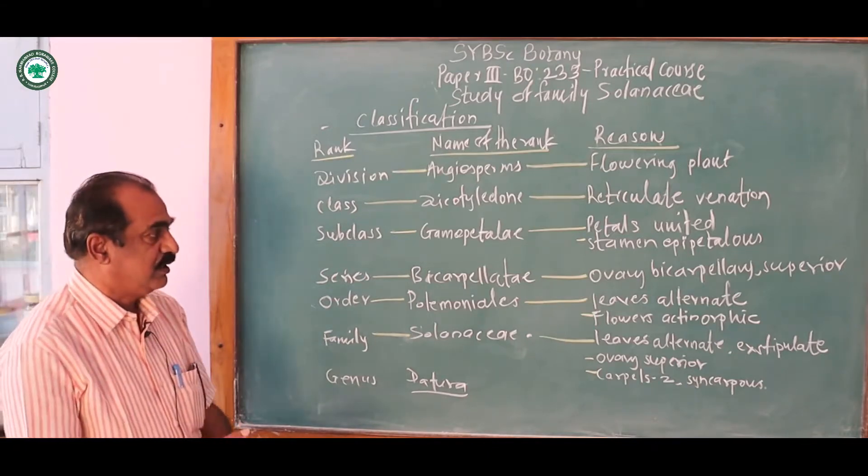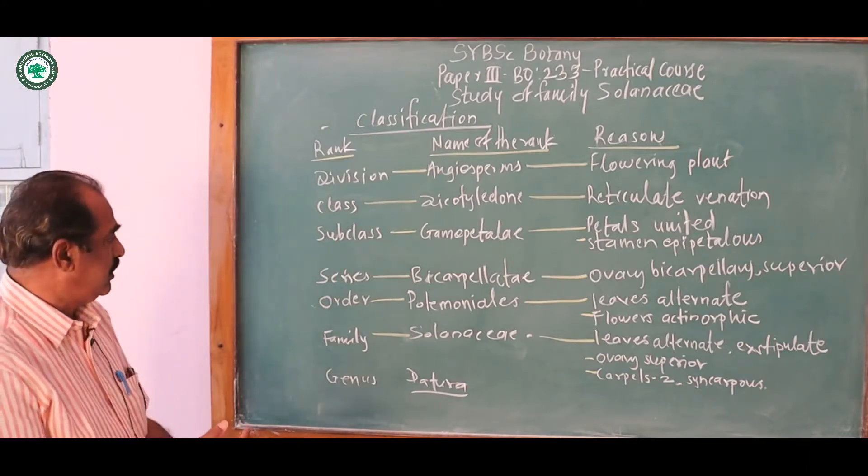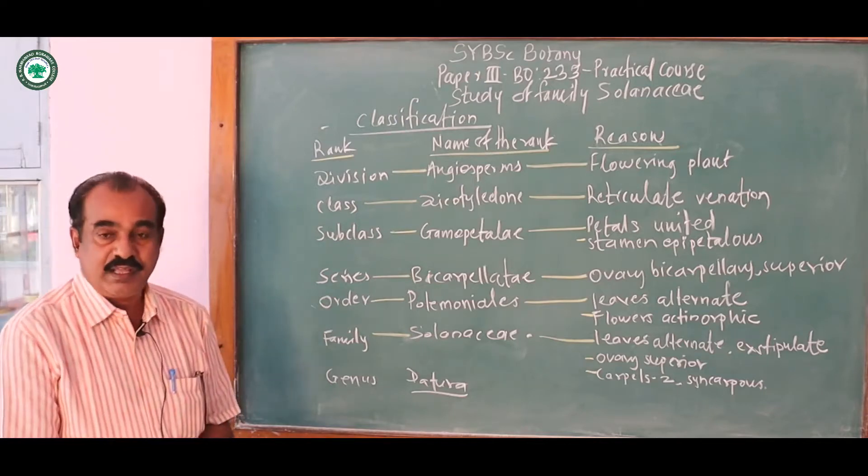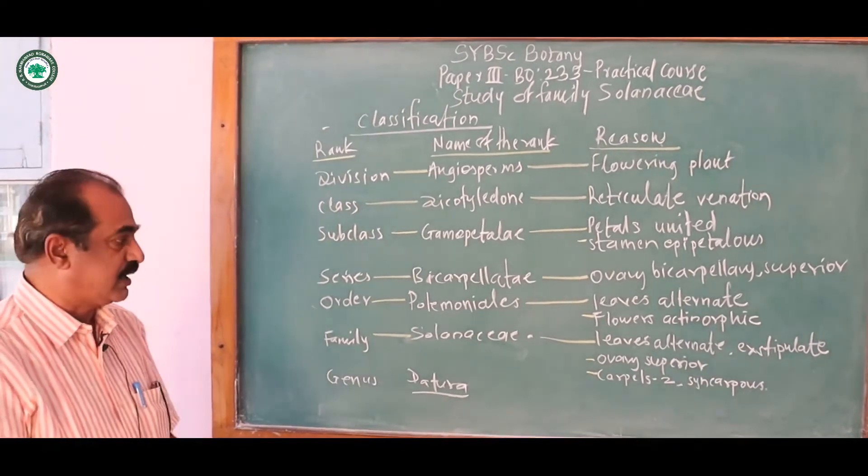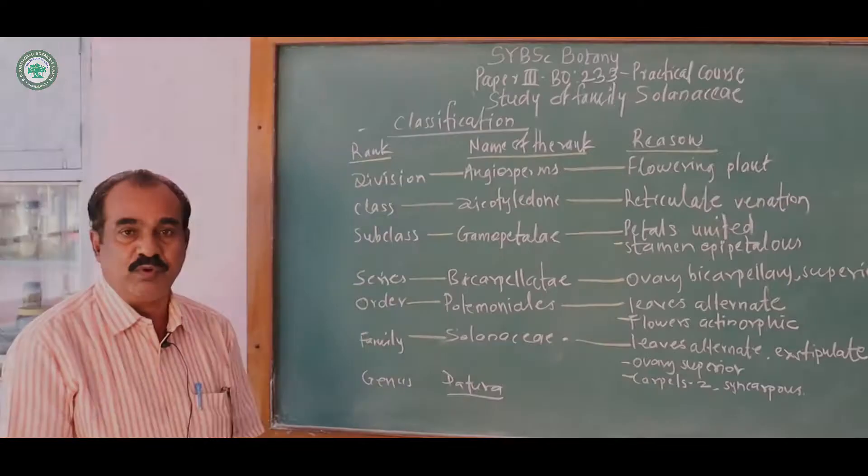Ovary bicarpellary and superior. Order Polemoniales, leaves alternate, flowers actinomorphic. Family Solanaceae and reasons are leaves alternate, exstipulate, ovary superior, carpels two and syncarpous is the condition. Then genus, Datura and species is stramonium.